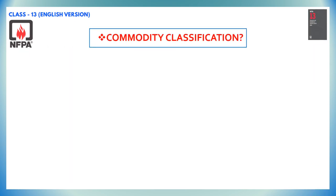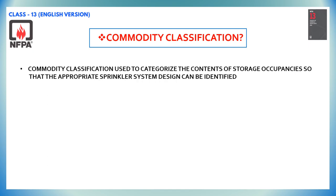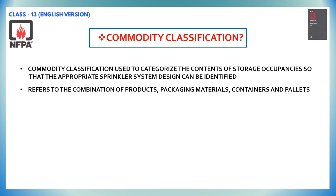Commodity classification is used to categorize the contents of storage occupancies so that the appropriate sprinkler system design can be identified. Commodity classifications are determined by not only the product but also the packaging of that product, the container those packaged products are in, and even the pallet type.